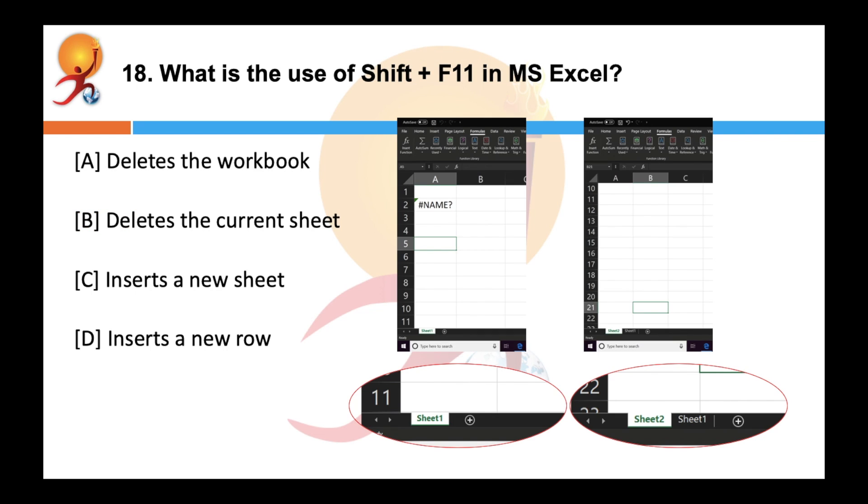What is the use of Shift plus F11 in MS Excel? Correct answer is C. So when Shift plus F11 key is pressed together, a new sheet is inserted in the Excel. It is a quick way to add a new sheet.